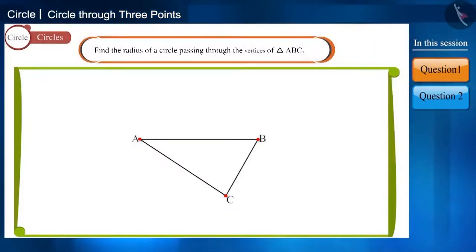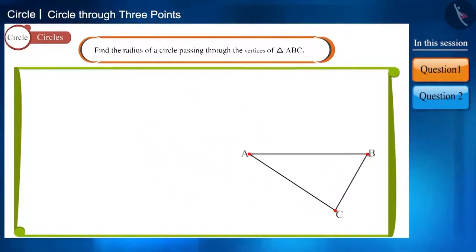You can see that all three points are non-collinear points. That is, there will be one and only one circle passing through these three non-collinear points. Now we will draw perpendicular bisectors of these two sides, side AB and AC like this.